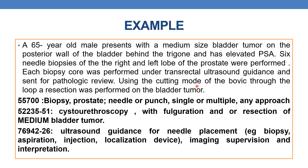Resection of tumor is done using the cutting mode of bovie through the loop. The CPT is 52235 along with modifier 51 to indicate multiple procedures — cystourethroscopy with fulguration and/or resection of the medium bladder tumor. For medium bladder tumor, the CPT is 52235. Then ultrasound guidance is also performed; for that, additionally 76942 along with modifier 26. So for this scenario, three CPTs are required: 55700, 52235 with modifier 51, and 76942 with modifier 26 to indicate the professional component.